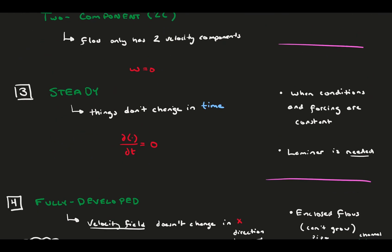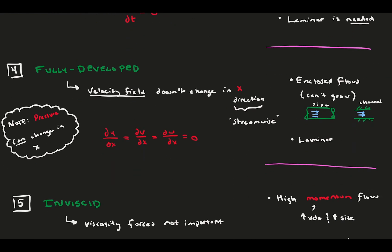Steady means no change in time of any quantity, which happens when your boundary conditions and forcing are constant. Fully developed says the velocity doesn't change in x, most seen in closed flows like pipes and channels.